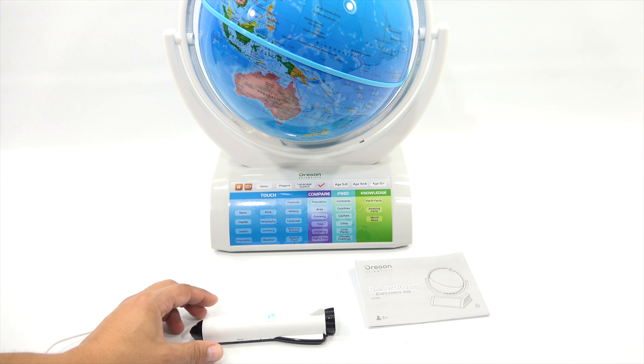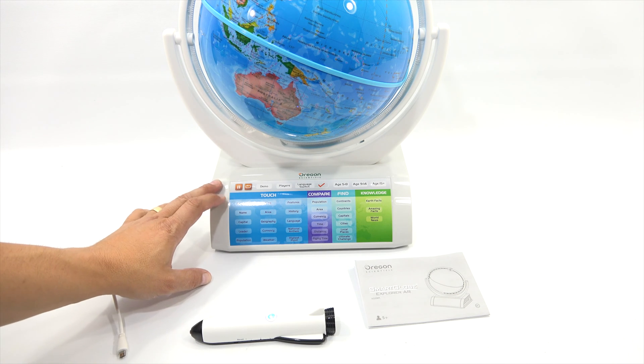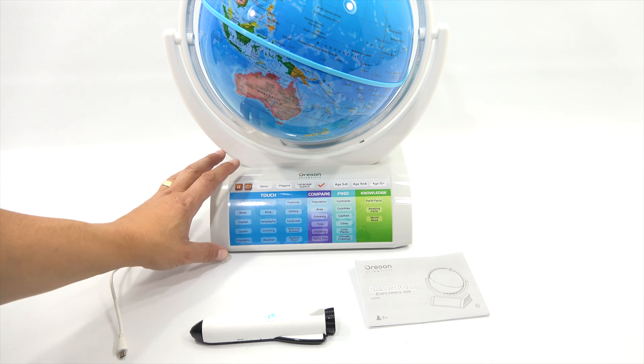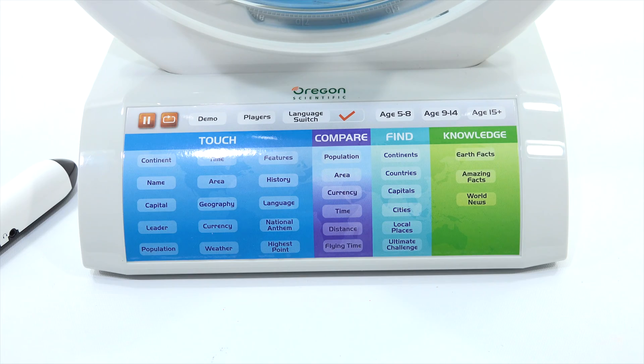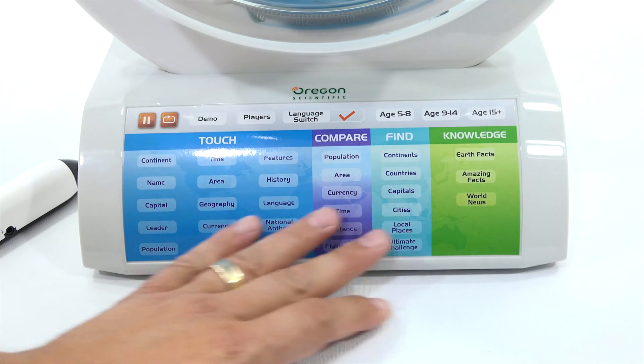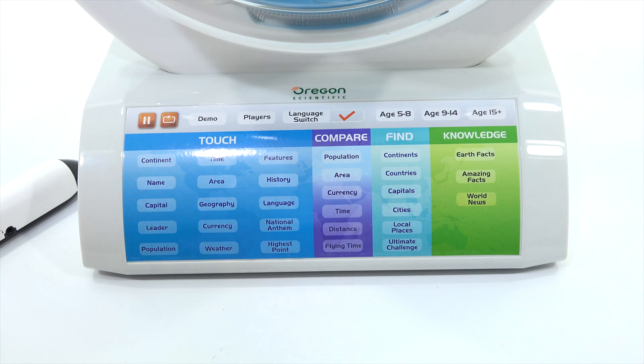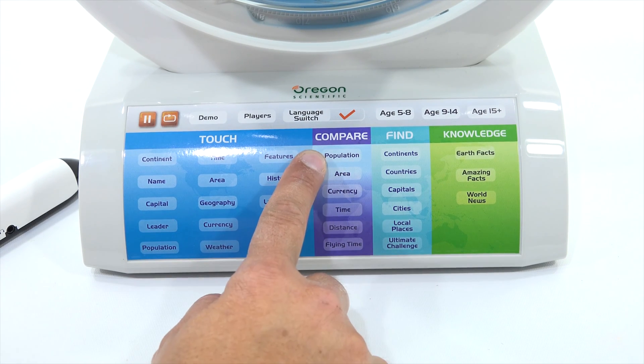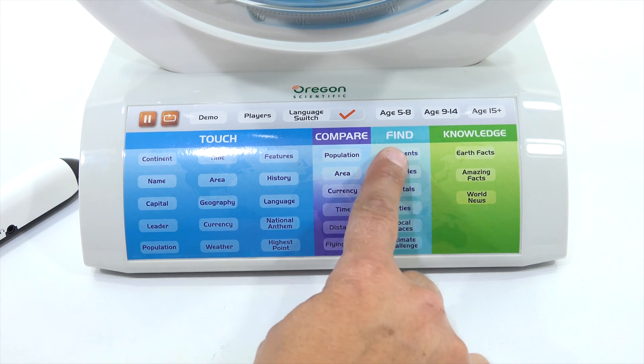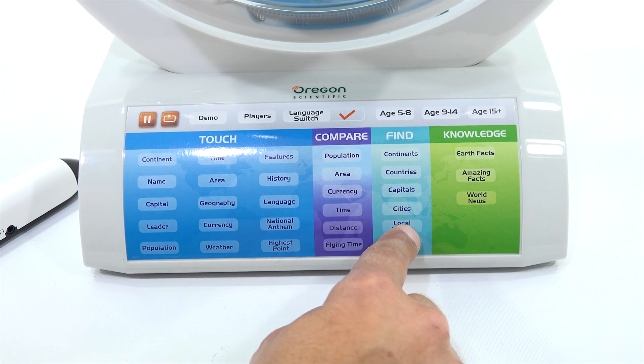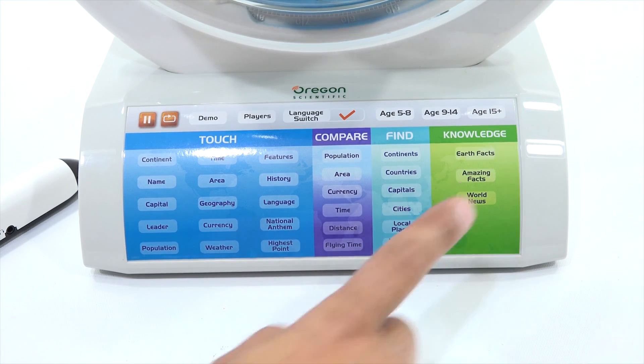All right, so let's just see. Here, I'll tell you what. Let me reset up here. Come in. I want to zoom into this, but I want to set it up just right so you could... We'll go over the whole front panel, and then I'll kind of turn the globe around and show you the back, the sides, and all of that next. All right, so this is what the front panel looks like. Now you have the touch, meaning you touch any of these, and you can get this information. Compare, so you can compare populations, areas, so you have to touch two times on the globe. Find, you can find these different things. It's part of the games. Knowledge will just give you amazing facts, earth facts, and world news.